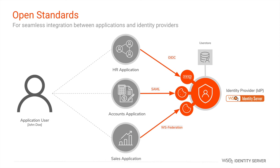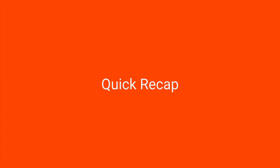The remedy for this is open standards. There are a few open standards for single sign-on; the most prominent ones are OpenID Connect, SAML, and WS-Federation. These protocols have well-defined messaging formats. If both the application and the identity provider support a common messaging format, there is no development overhead to connect the two systems — you only need to configure the relevant parameters on both sides to onboard the application for single sign-on.